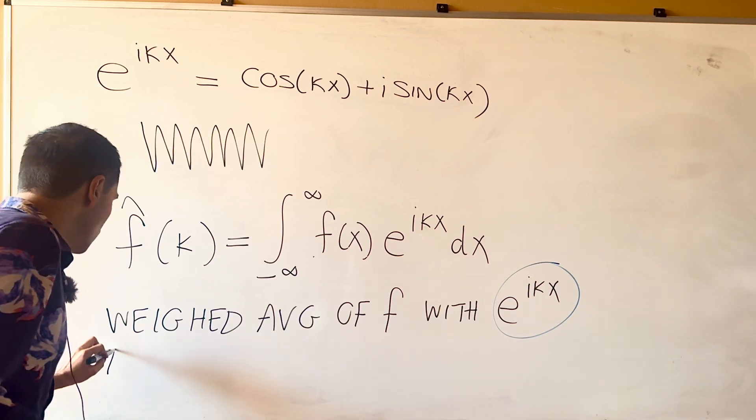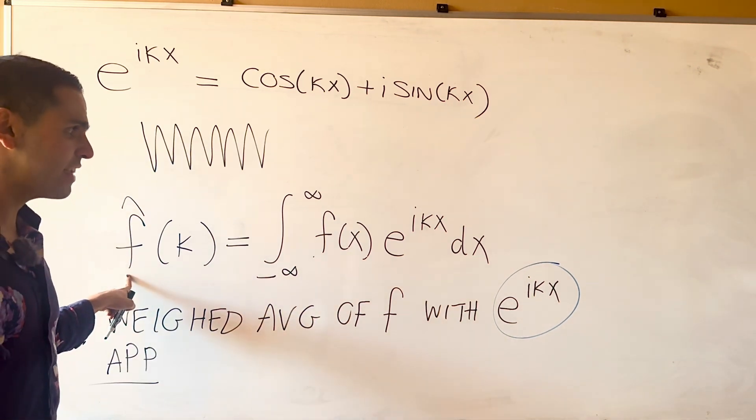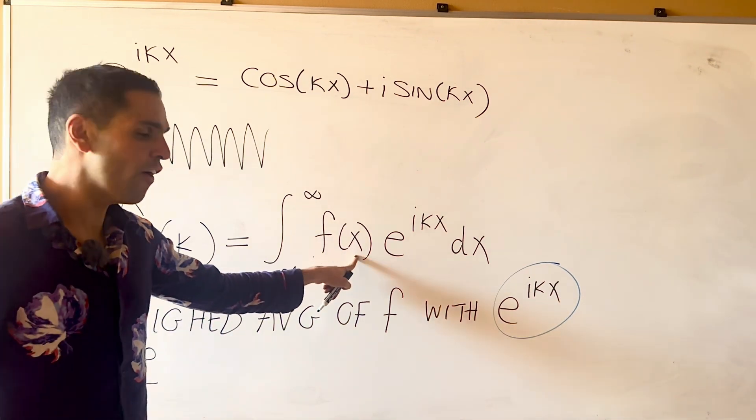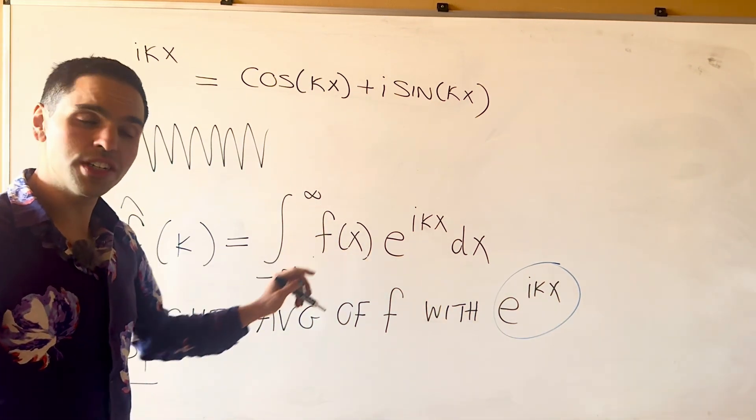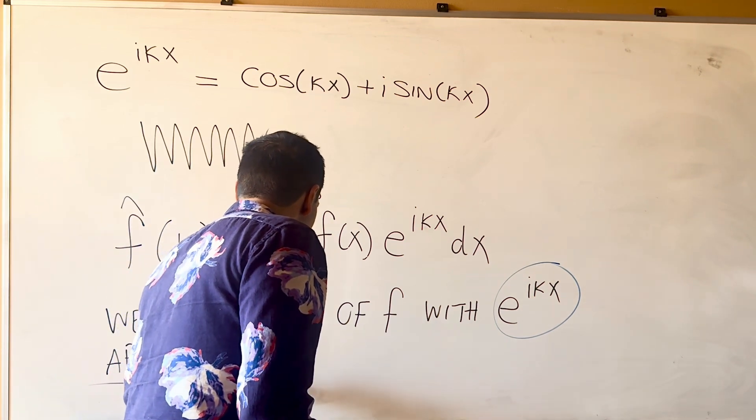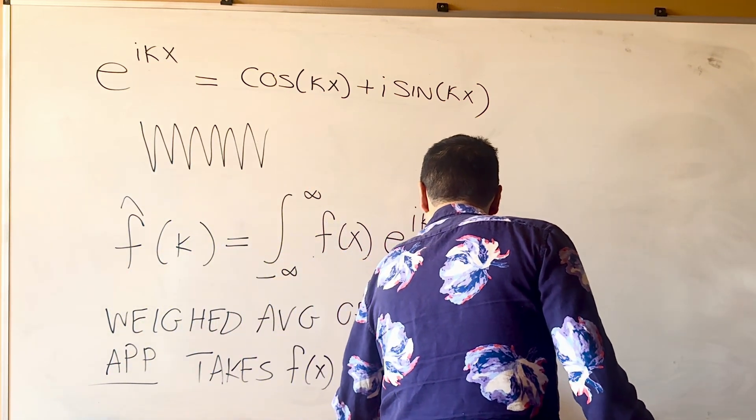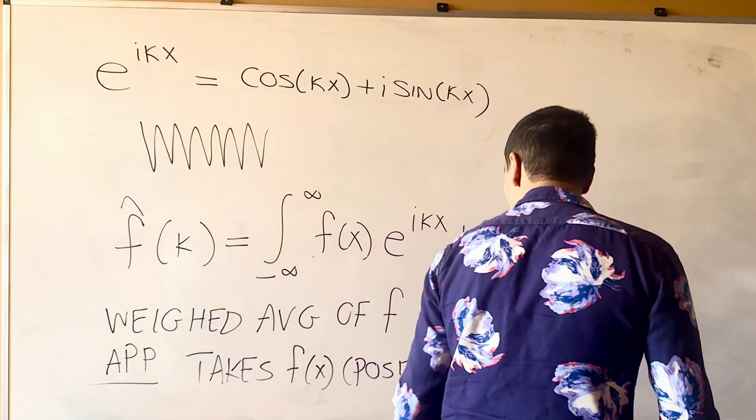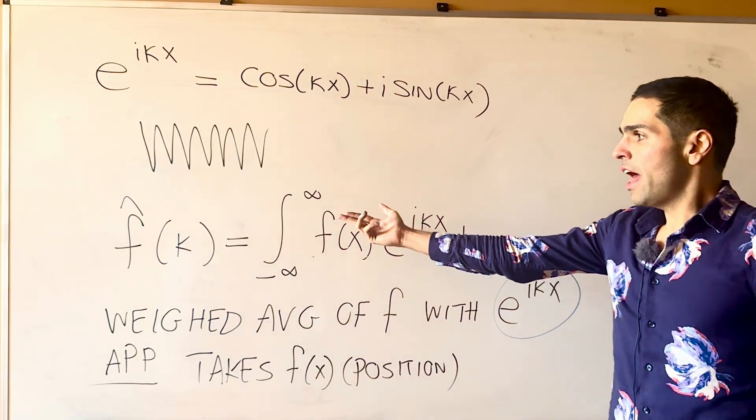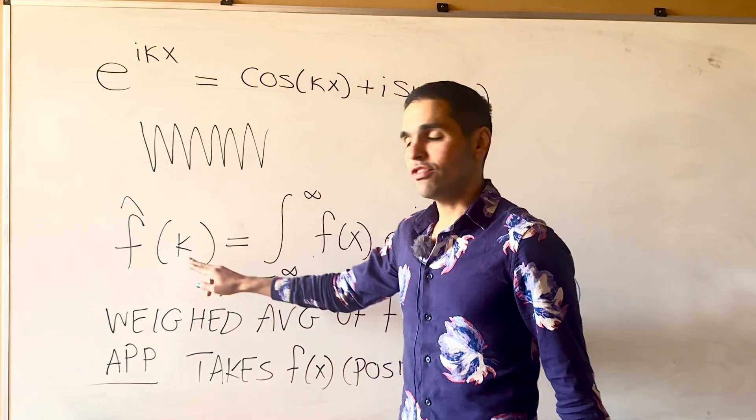And, finally, in applications, this is super useful, because what f hat does, it takes a function of x, which is position, and turns it into f hat of kappa, where kappa is interpreted as frequency.